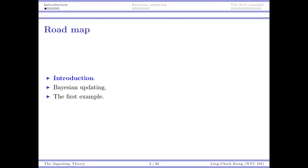In this video I will give you the introduction, and in the next video we will talk about the main mathematical tool we need for a signaling game, which is Bayesian updating. For the last two videos I will talk about one specific example about how to model a signaling game and how to get the result.